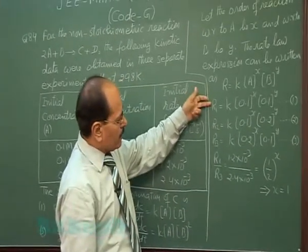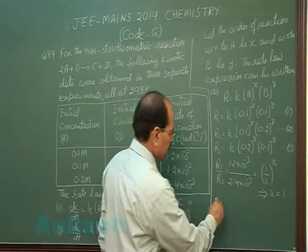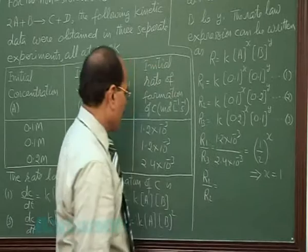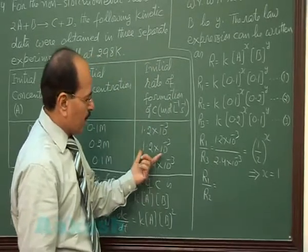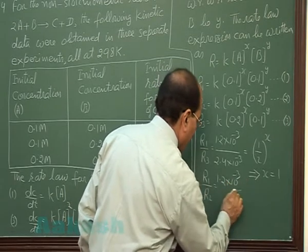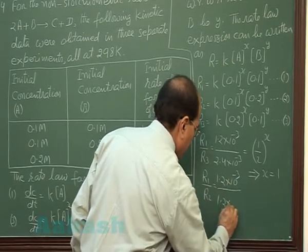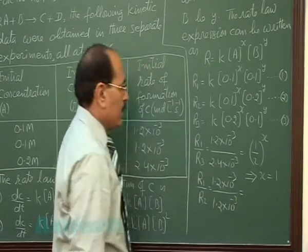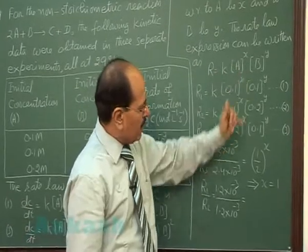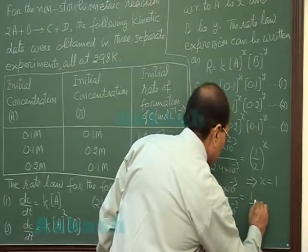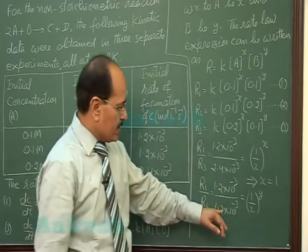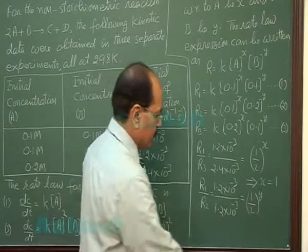If we divide R1 by R2, the initial rates are same. On the right hand side, the x term gets cancelled and we are left with 1 by 2 raised to the power y. So, since the left hand side has 1, y must be equal to 0.